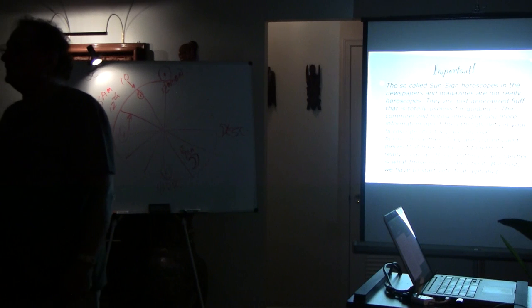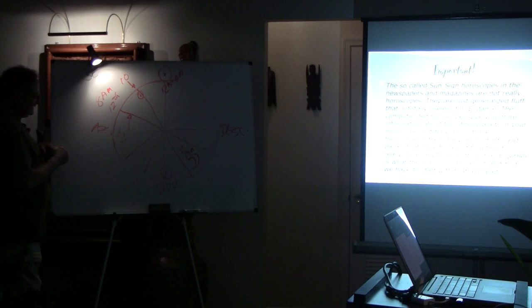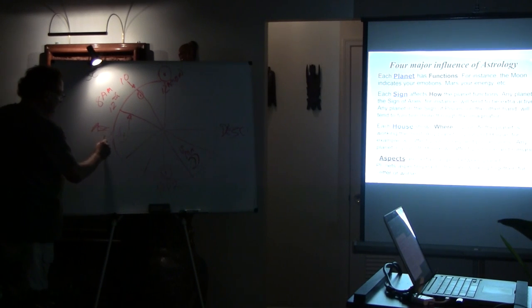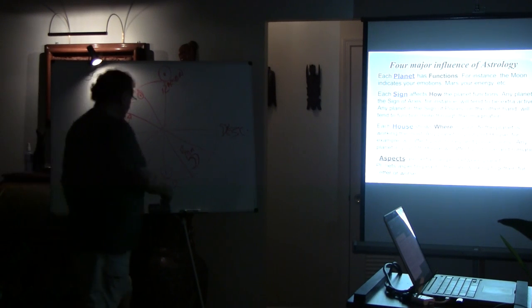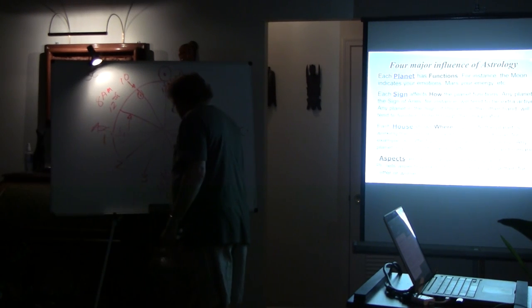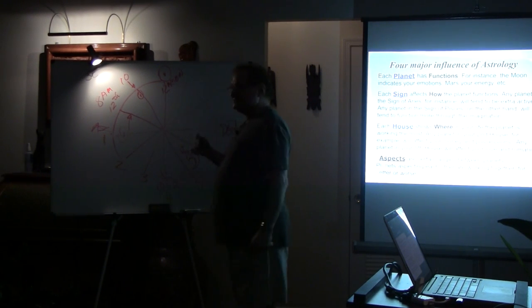The house is the 12 divisions of a chart. The first house is always from the ascendant to the second house, to here. So this is the first house ascendant. The second house is here. These don't change. Third house is here. And your fourth house is here. Fifth house is here. Sixth, all the way around. Seventh.